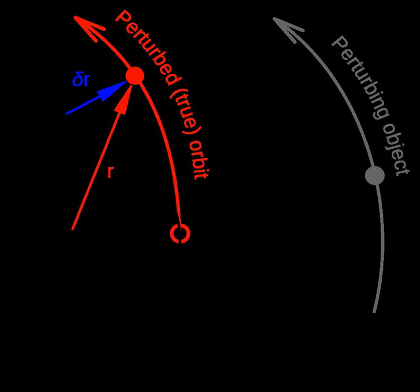A third body or multiple other bodies whose gravity perturbs the object's orbit, for example the effect of the Moon's gravity on objects orbiting Earth.